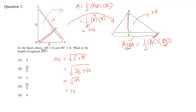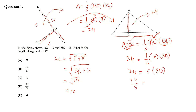AC is 10. We put values here: 24 is equal to half times AC, which is 10, and we will find BD. This gives 24 equals 5 times BD. So BD equals 24 divided by 5. This is the required answer.